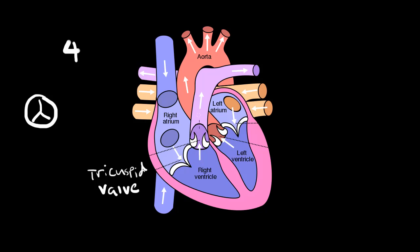The next one is here at the pulmonary artery, between there and the right ventricle. This is called the pulmonary semi-lunar valve. This one also has three flaps, much like the tricuspid valve, and it has a semi-lunar shape according to the moon. It's going to prevent the flow of blood from the pulmonary artery back into the right ventricle.